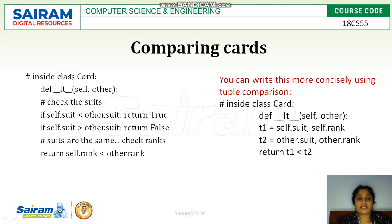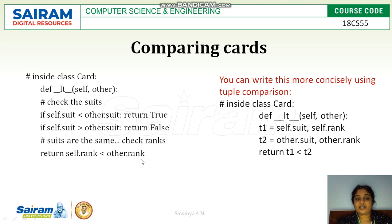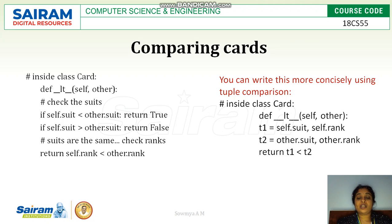Next is comparing cards inside the class. Check the suit: if self.suit is less than other.suit, return True; if suits are same, check the rank and return self.rank less than other.rank. Alternatively, you can write t1 as (self.suit, self.rank) and t2 as (other.suit, other.rank), and return t1 < t2. This returns True or False, useful for exchanging cards.